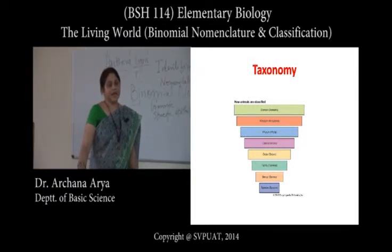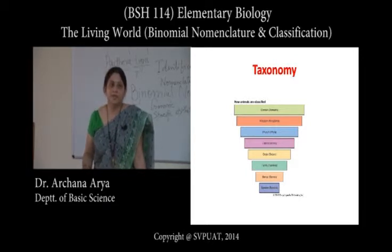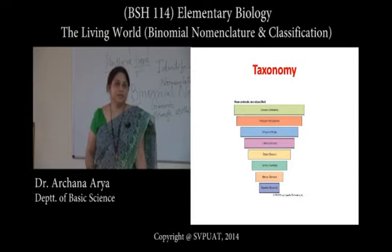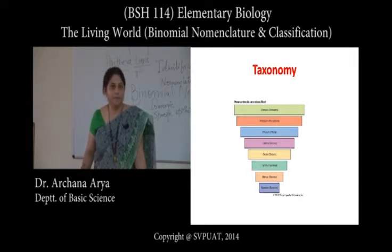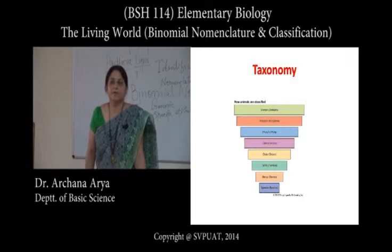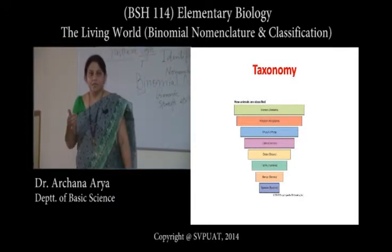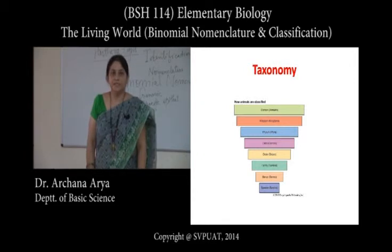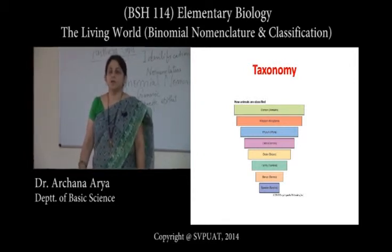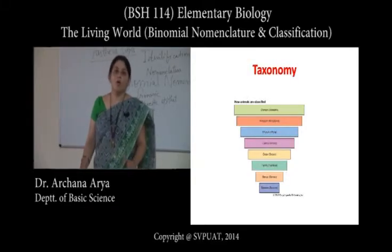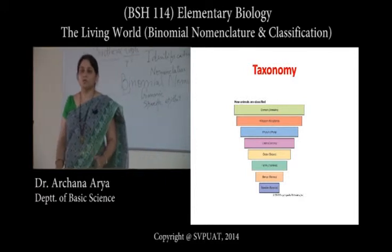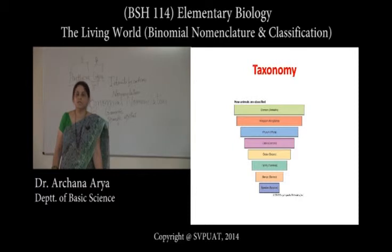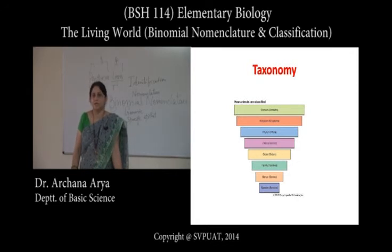Later on, the need was felt that the criteria should be changed — like bacteria needed to be under some other group. In the year 1969, a biologist named R.H. Whittaker gave a five-kingdom system of classification. More recently, this system has become a six-kingdom classification — they have separated monera, which is related to bacteria, and further classified bacteria into eubacteria and archaebacteria. So it is either a five-kingdom or a six-kingdom classification.